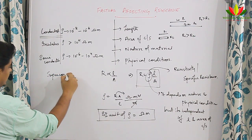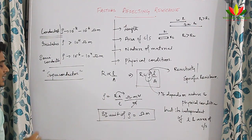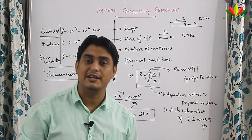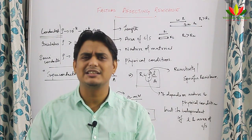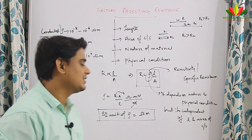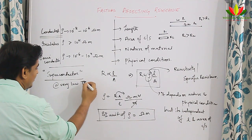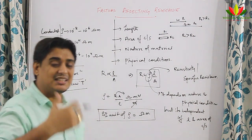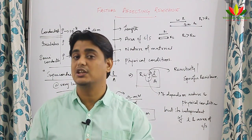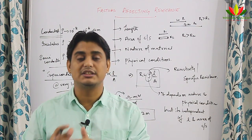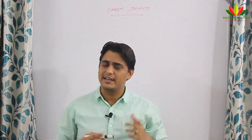There is one more classification called superconductors. Superconductors are materials which have very high conductivity, or almost zero resistivity. To achieve zero resistivity, it is possible at very low temperatures. It has been found that at very low temperatures the resistivity starts decreasing, and we get almost zero resistivity. That zero resistivity creates the property of superconductivity, because conductivity becomes very high.